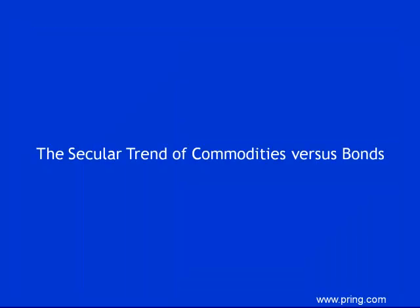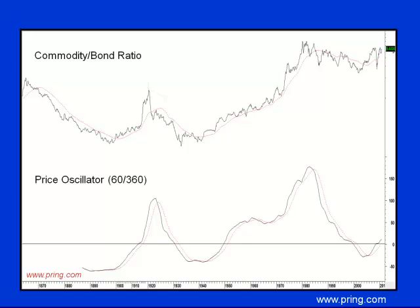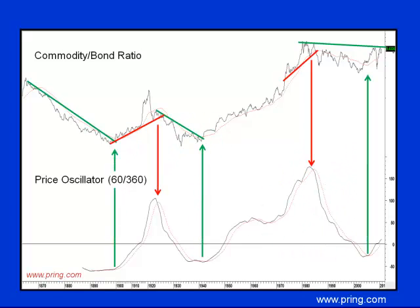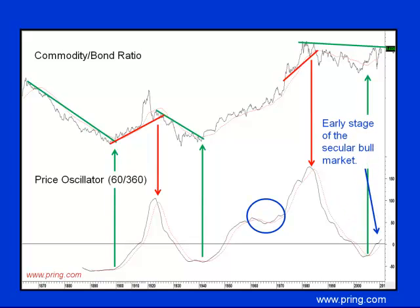Now we turn to the relationship between commodities and bonds — the ultimate inflation-deflation relationship — shown in this chart. Trendline violations in the past have reliably signaled reversals in the secular trend of this relationship. The ratio has been in a trading range for the last 30 years and is now approaching the upper end for the fifth time. If it punches through, such action will represent a major long-term inflationary signal, because it will denote the outperformance of commodities over bonds for years to come. The green and red arrows flag when the oscillator has crossed above and below its moving average, offering timely and accurate signals — with the notable exception of a false signal in the 1960s. The oscillator is currently in the early phase of a secular advance and can certainly support a significant upside breakout by the ratio before becoming overbought.